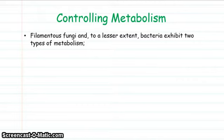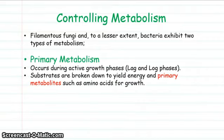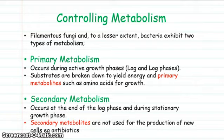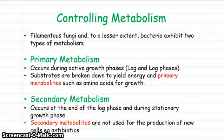Finally, looking at controlling metabolism, there are two basic types of metabolism that microbes may show. First, primary metabolism, which occurs during the growth phase — substances are broken down to produce energy through respiration, and primary metabolites for the actual growth of the organisms are produced. In secondary metabolism, however, which occurs at the end of the log phase and during the stationary phase, secondary metabolites not used for the production of new cells begin to be produced. That's the end of that section — many thanks.